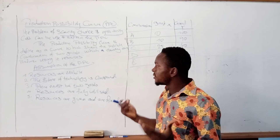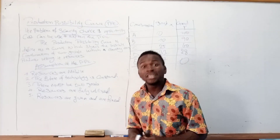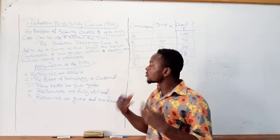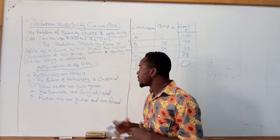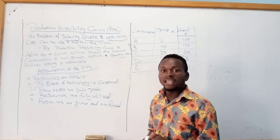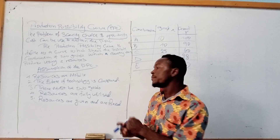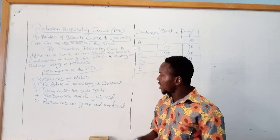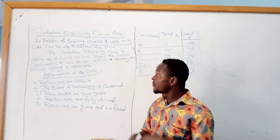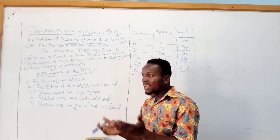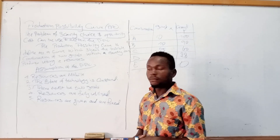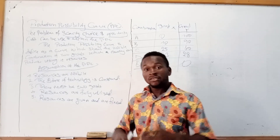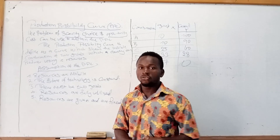Secondly, we assume that the state of technology is constant. When assuming for the production possibility curve, the state of technology must always be constant. Third, there must be two goods to be produced — either good X or good Y, or capital or consumer goods. Fourth, resources are fully utilized. And lastly, resources are given and are fixed.